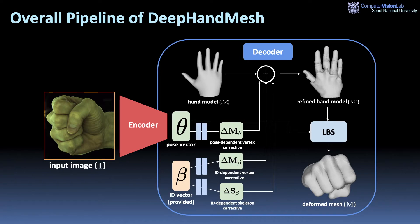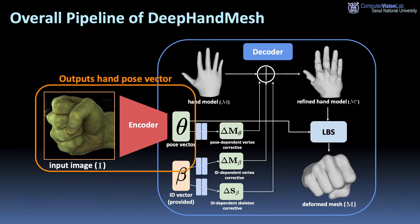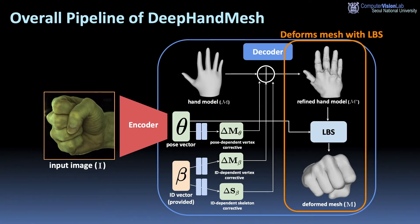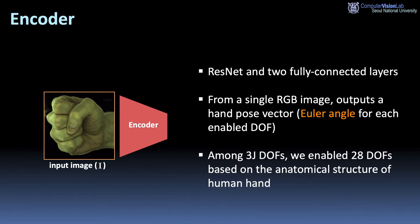This shows the overall pipeline of deep-hand mesh. The encoder takes the input image and outputs the hand pose vector. The encoder refines the hand model and the deformed mesh with LBS. The encoder consists of ResNet and two fully-connected layers. From a single RGB image, it outputs the hand pose vector, which contains all angles for each enabled degree of freedom. Among three J degrees of freedom, we enabled 28 degrees of freedom based on the anatomical structure of the human hand.